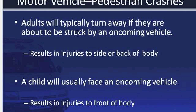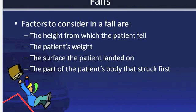Adults will typically turn away if they are about to be struck by an oncoming vehicle, resulting in injuries to the side or back of the body. A child will usually face an oncoming vehicle, resulting in injuries to the front of the body. Falls are a common mechanism of injury. Factors to consider in a fall are the height from which the patient fell, the patient's weight, the surface the patient landed on, and the part of the patient's body that struck first.